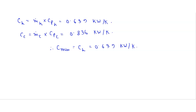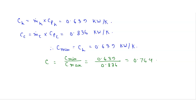Now we have to find the heat capacity ratio C, which equals C_minimum divided by C_max, equal to 0.639 divided by 0.836. After solving this we get 0.764. Now we have to find the maximum heat transfer rate.